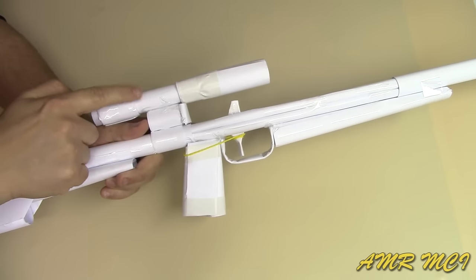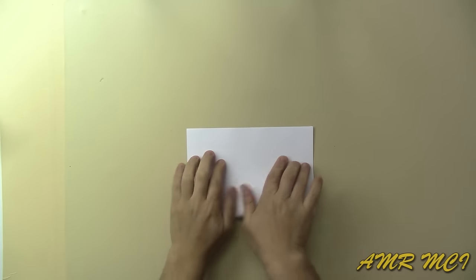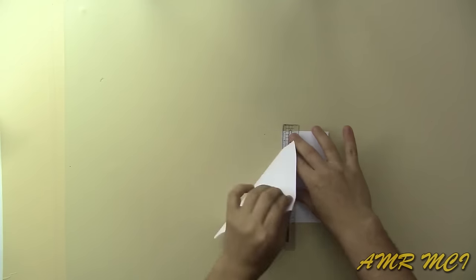Now let's start making the scope by taking a sheet of paper and folding it in half, then cut it into two pieces.